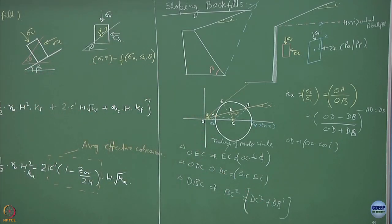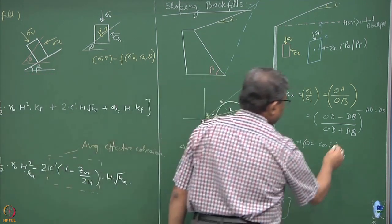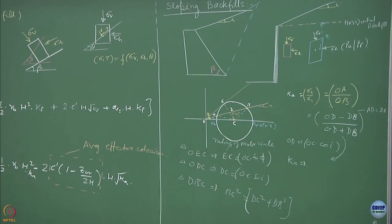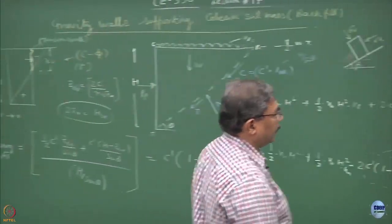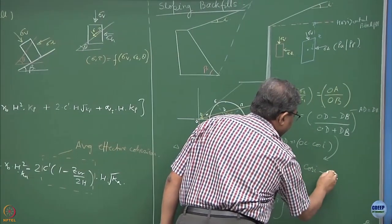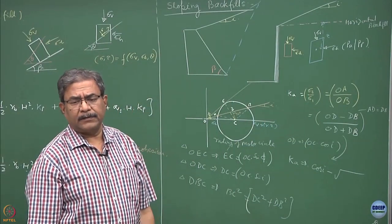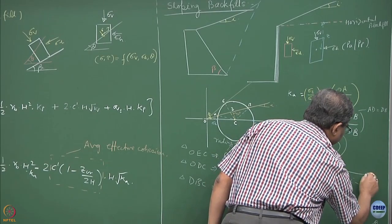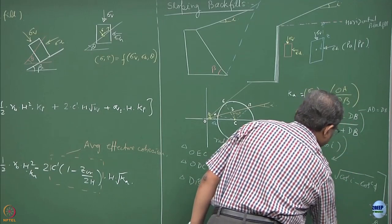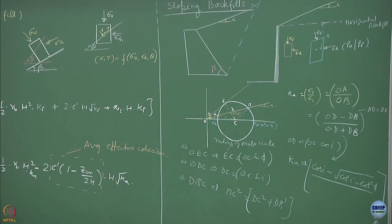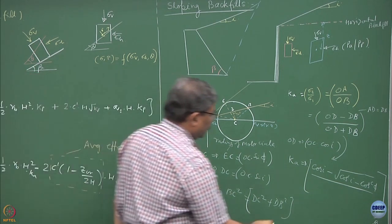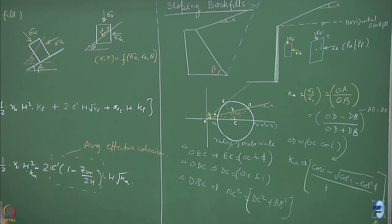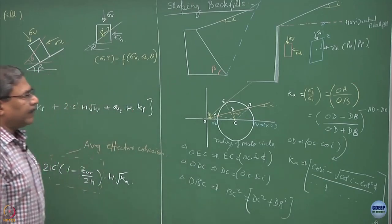So if you solve this expression, if you substitute it over here, you will be getting Ka will be equal to, can you try this? Cos i minus under root cos square i minus cos square phi divided by cos i plus under root cos square i minus cos square phi. So this is the value of Ka which we have obtained.